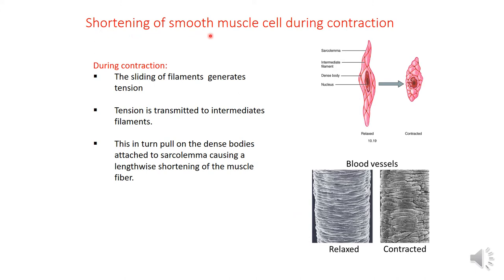During contraction, the sliding of actin filaments over myosin filaments generates tension. This tension is transmitted to the non-contractile intermediate filaments, which in turn pull on the dense bodies attached to the sarcoplasm, causing a lengthwise shortening of the muscle fibers.